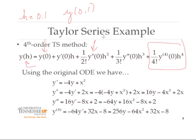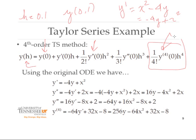All we have to do is evaluate Y(0.1). We're given that y prime equals x squared minus 4y. We know the relationship of the derivatives: given the first derivative, we can compute the second derivative as the derivative of the first derivative. Then the third derivative is the derivative of the second, and the fourth is the derivative of the third. The trick is to start with the information given and derive the remaining terms of the Taylor series expansion — very straightforward.